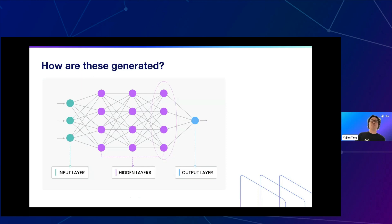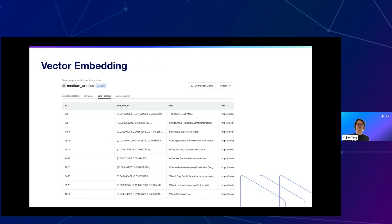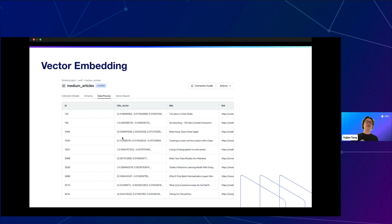Vector embeddings are generated from the second-to-last layer of a neural network. Data goes through hidden layers with many calculations, and the output layer produces a classification or prediction. The vector embedding captures all the information leading to that classification — it represents the semantic meaning of the input. In practice, these are long strings of floating-point numbers, which can be positive or negative, as shown in this screenshot from Zilliz.